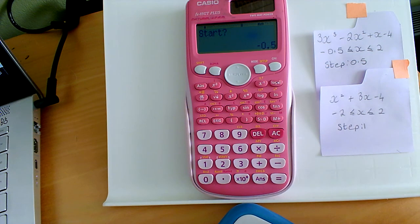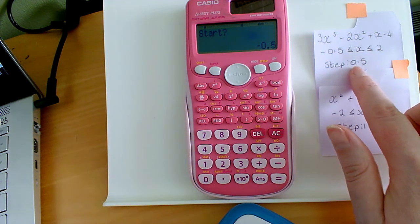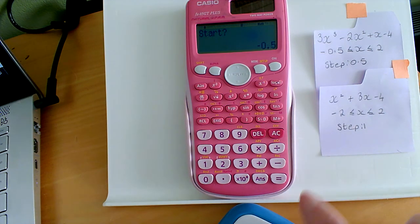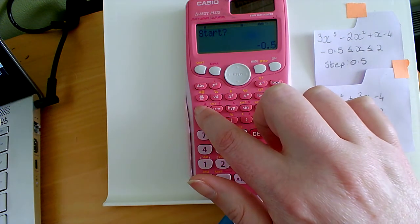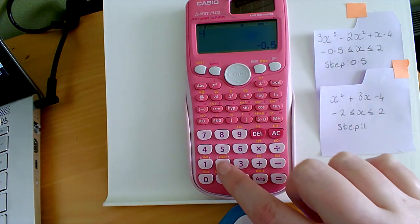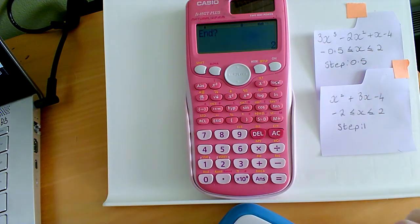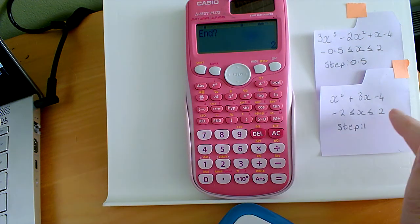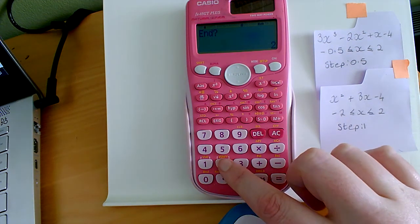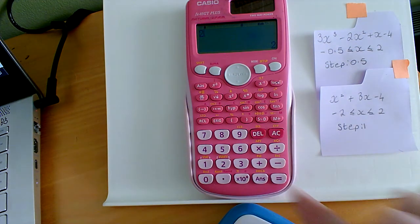Now, because I've just done a function, it remembers that my start value is minus 0.5. But in this one, you'll see that it's minus 2. So without pressing anything else, I'm just going to put in my negative number button. So minus 2 equals. And it's going to end at 2, which is the same as the previous one, which is a coincidence. So whatever it is, I'm just going to input 2 equals.